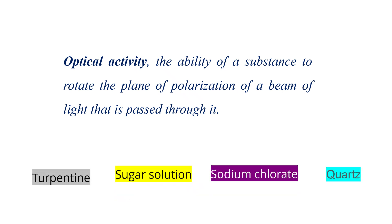Some substances that show optical activity include turpentine, sugar solution, sodium chloride, and quartz. There are certain solid materials and some liquids that can show optical activity, and these materials are termed optically active substances.